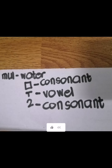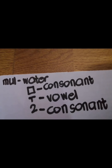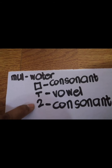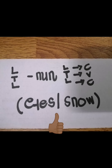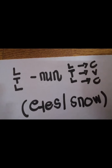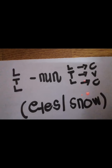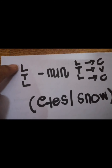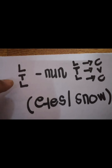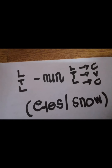Another example is 물, meaning water. It's a consonant-vowel-consonant pattern: letter M, letter U, and letter L. Then 눈, which means ice or snow in English — it's a three-letter word: N which is the consonant, U which is the vowel, and N which is the final consonant. The pattern is C plus V plus C.